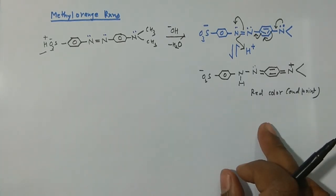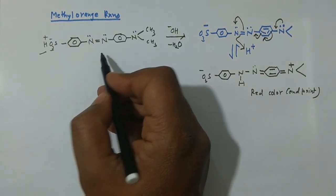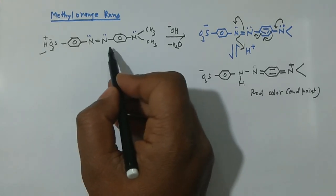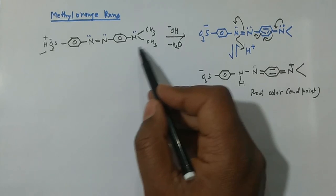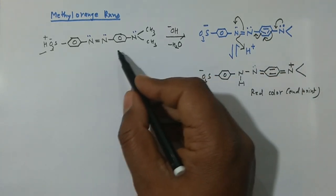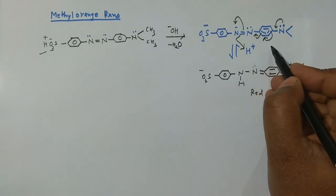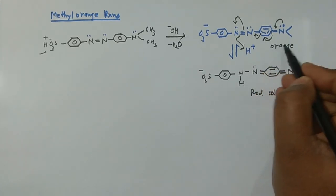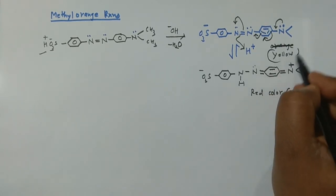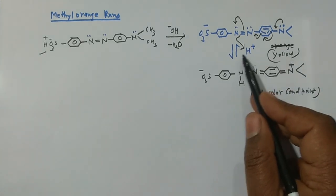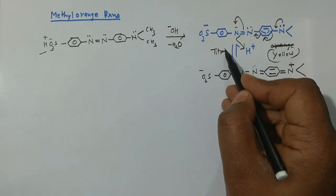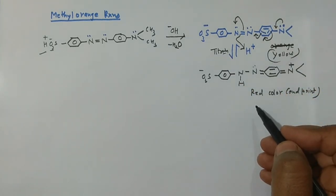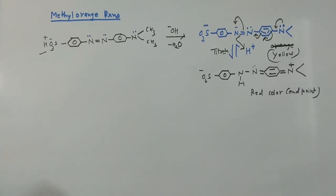To summarize the methyl orange color changes: the neutral/alkaline form (yellow) is the starting point when you add methyl orange to the colorless solution after the phenolphthalein endpoint. Upon titration with acid during the methyl orange step, you get the protonated red form as the endpoint. These reactions are very important for both practical examinations and theory.